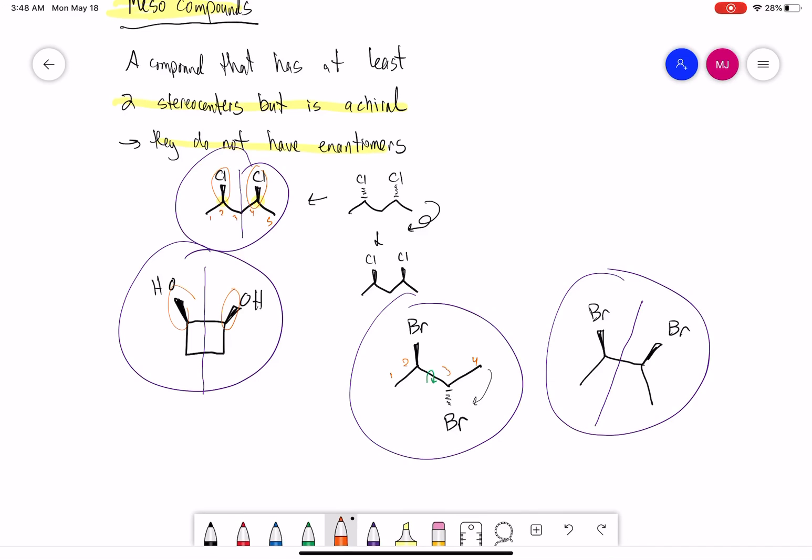And what we'll know here: any meso compound does not have enantiomers and they are achiral.